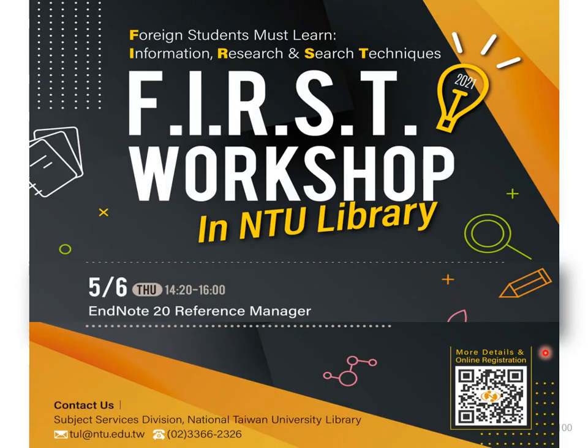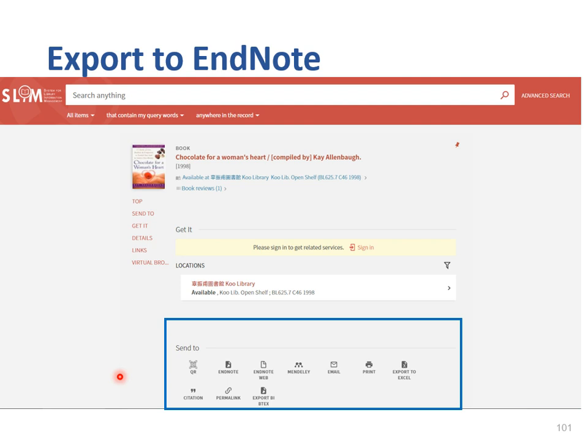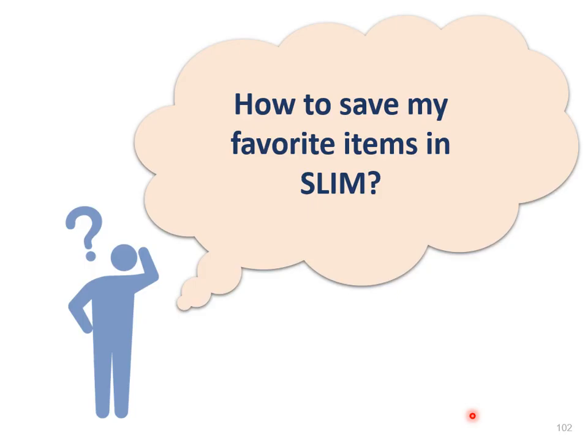Let's get back on track. If you want to export a reference to EndNote in the bibliography record page, there is a send to section in the middle part of the page. Click the EndNote button, then choose UTF-8 and download. An RIS format file will be downloaded. Double-click it and it will be imported into the EndNote library.